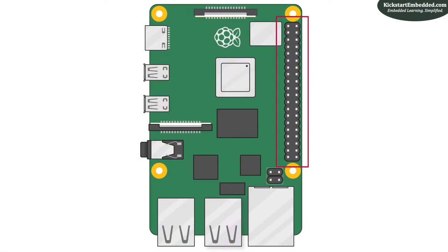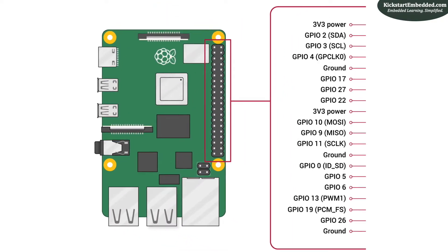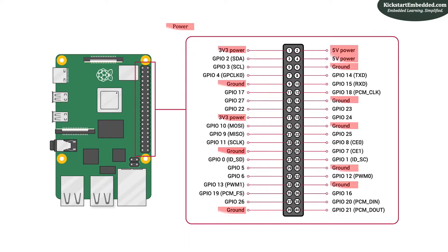We previously saw the feature-rich 40-pin connector of the Raspberry Pi. You have primarily power, communication, and sound pins. The best part is all of these I/O can also be used as general purpose I/O, unless absolutely necessary to use them as something else.